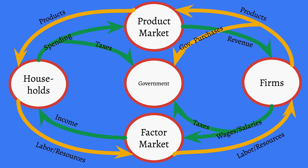Should that arrow technically be coming out of a different part of the model? Probably — it should probably be coming from up here, because governments buy things in the product market, just like households do, but there's just not great room for the arrow with the labels. When we look at households, they send things to the government too, besides taxes. For instance, think about a public school teacher such as myself — I don't sell my labor in the factor market to a firm, I sell my labor to the government. Anything — land, labor, capital — that the government purchases, we call these government-owned factors.